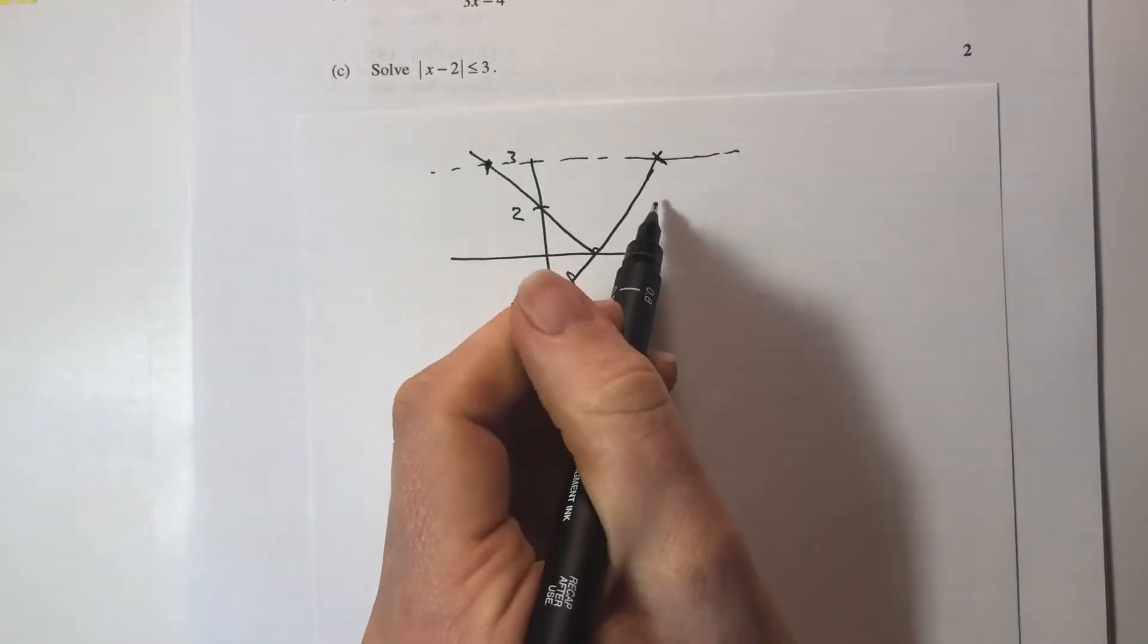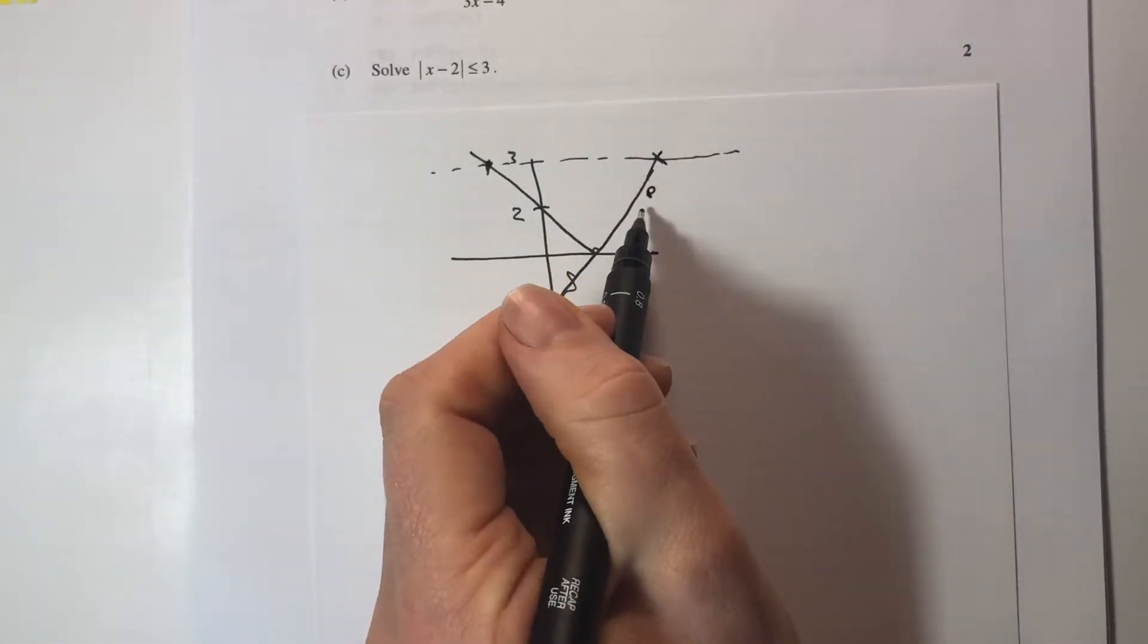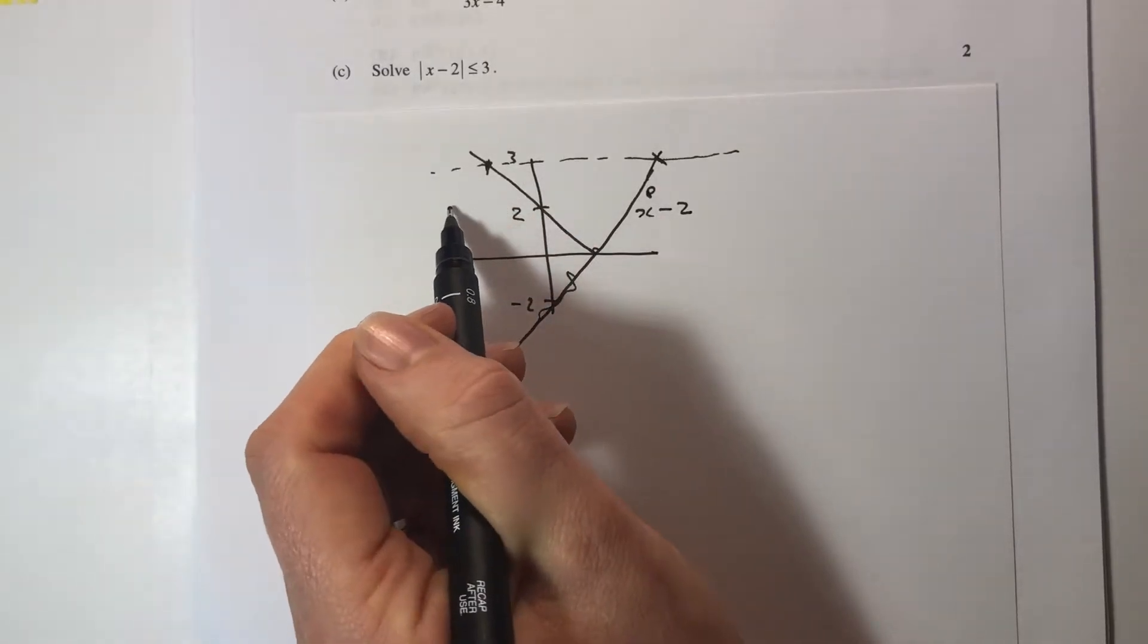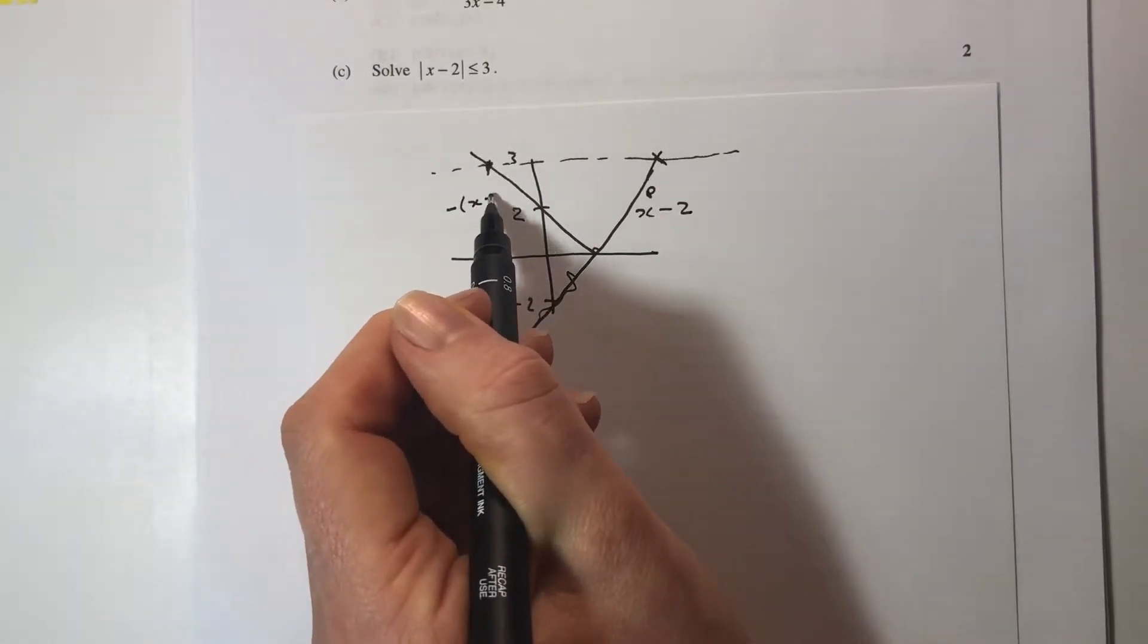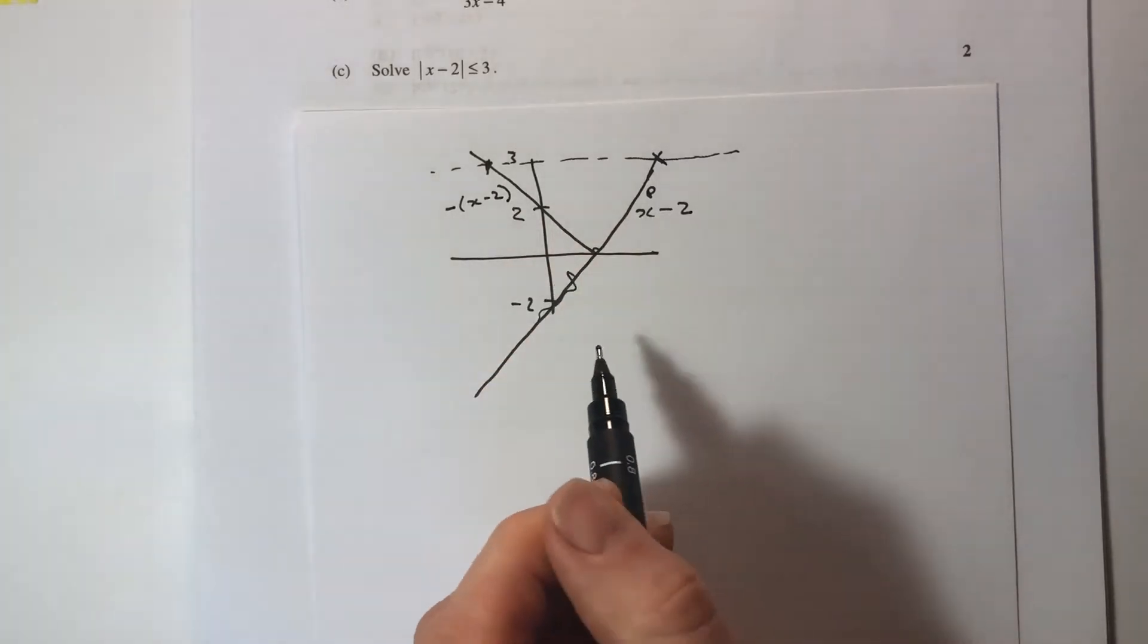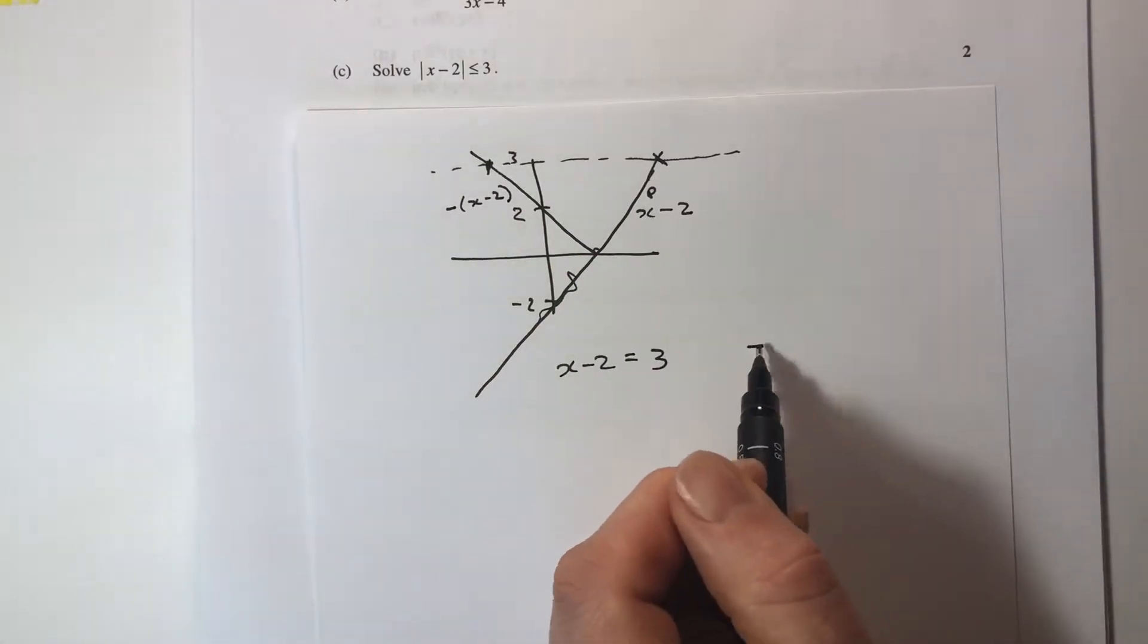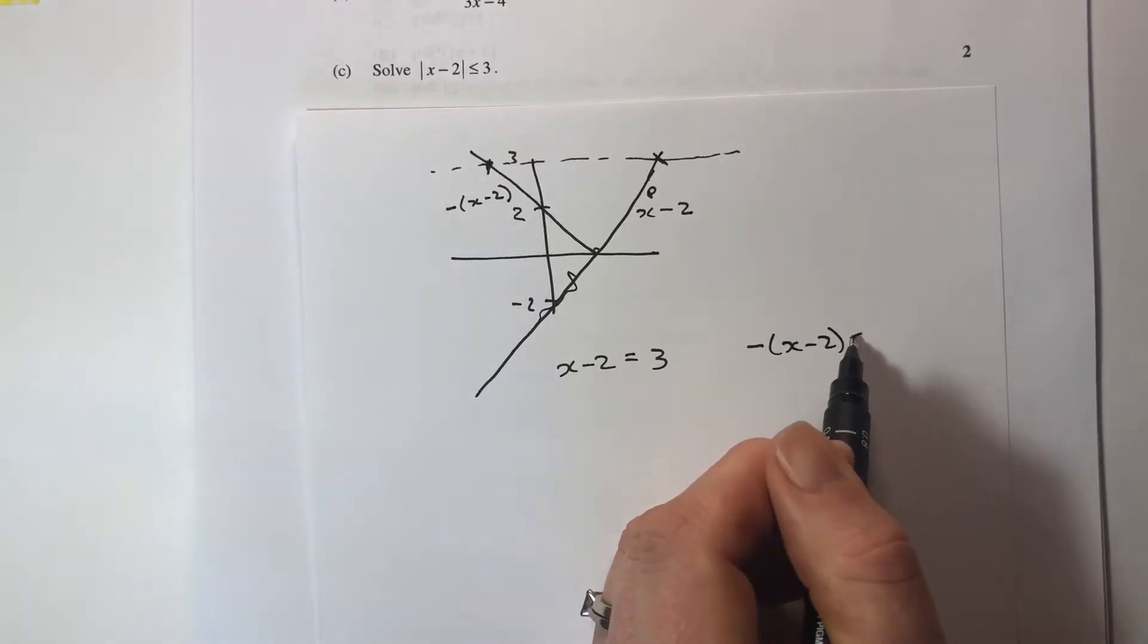Now in this situation, that was from the positive version of the x minus 2, so literally just x minus 2 is a line. And this line was created by negating that, so the negative of x minus 2. So what I need to do is I need to find when x minus 2 would equal 3 or when the negative of x minus 2 would equal 3.